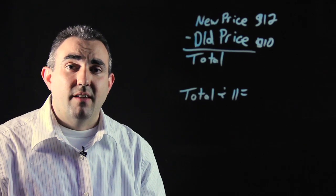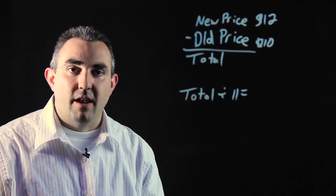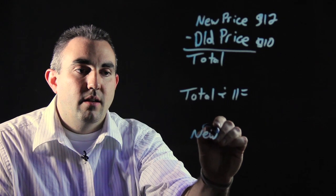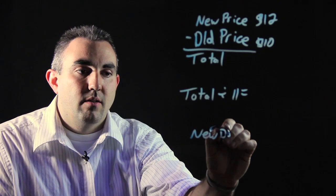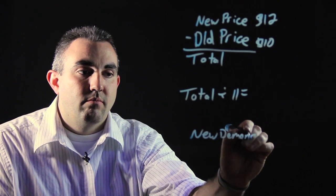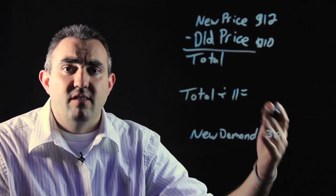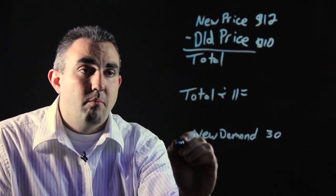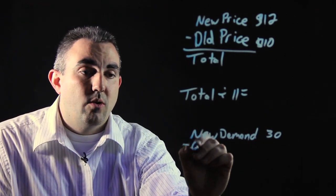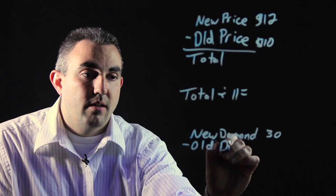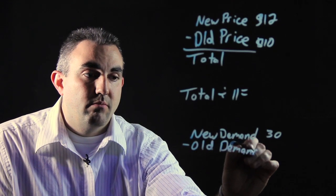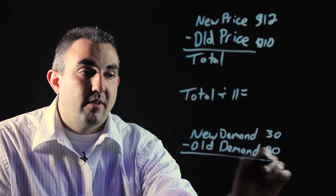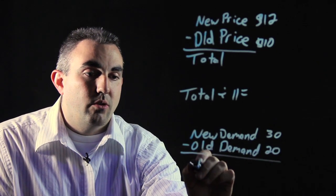You're going to do the same exact thing for the demand of the product. So the new demand — let's say 30 units of whatever object is being sold — minus the old demand, let's say it was 20. This will give you a total, which is 10.